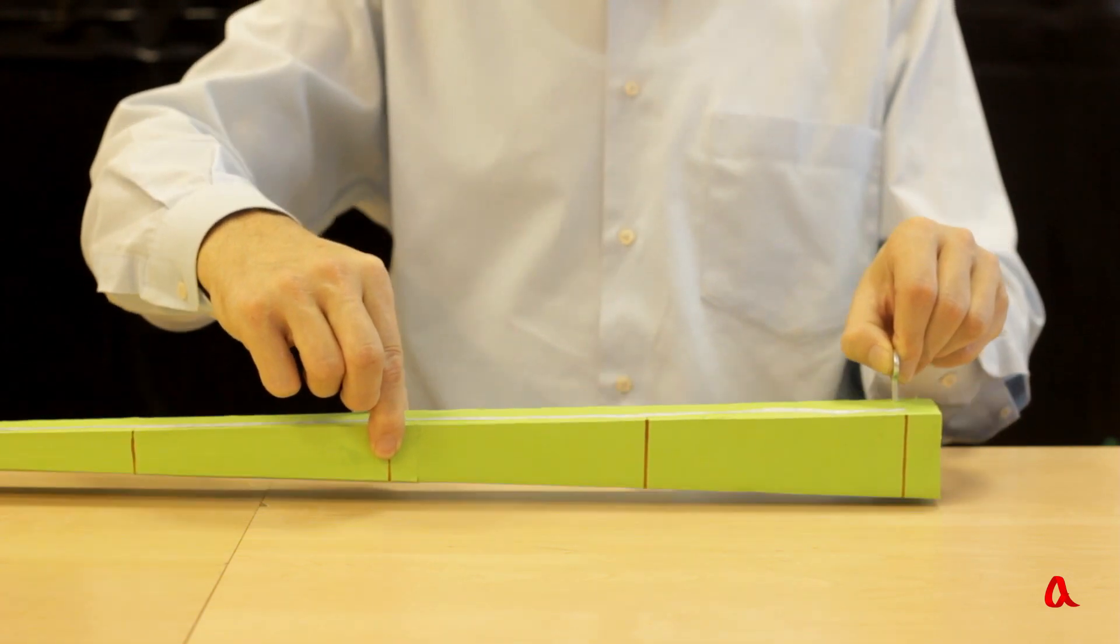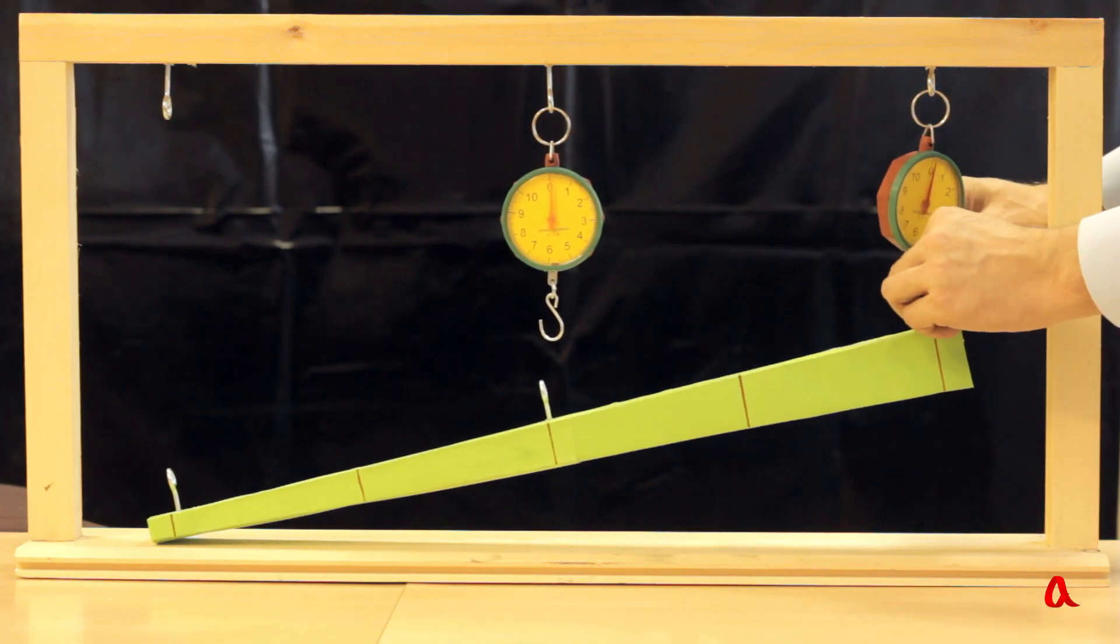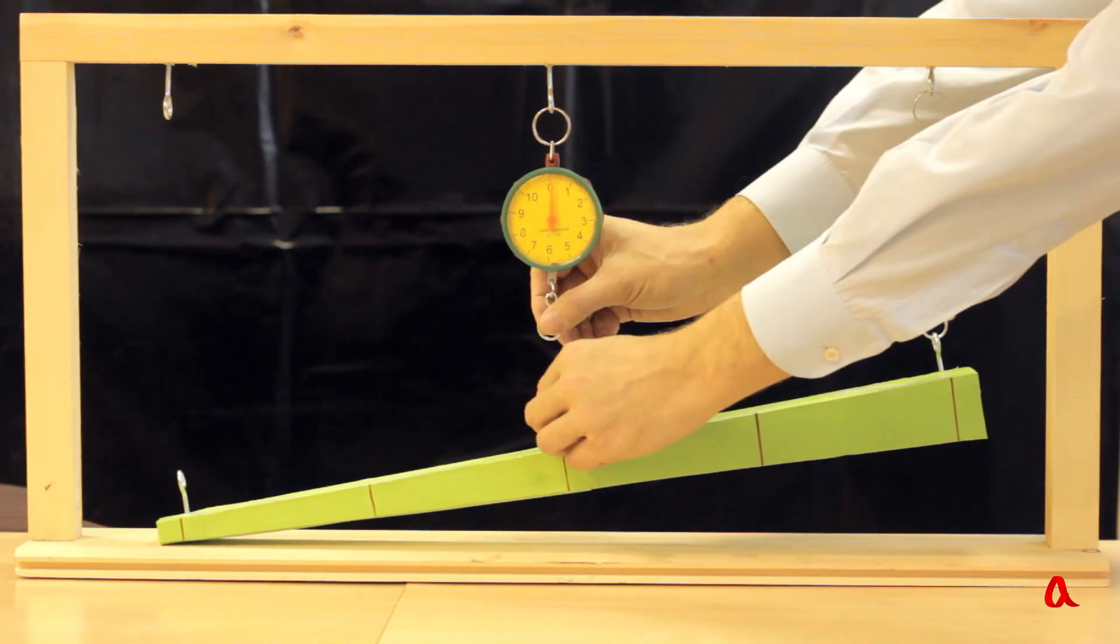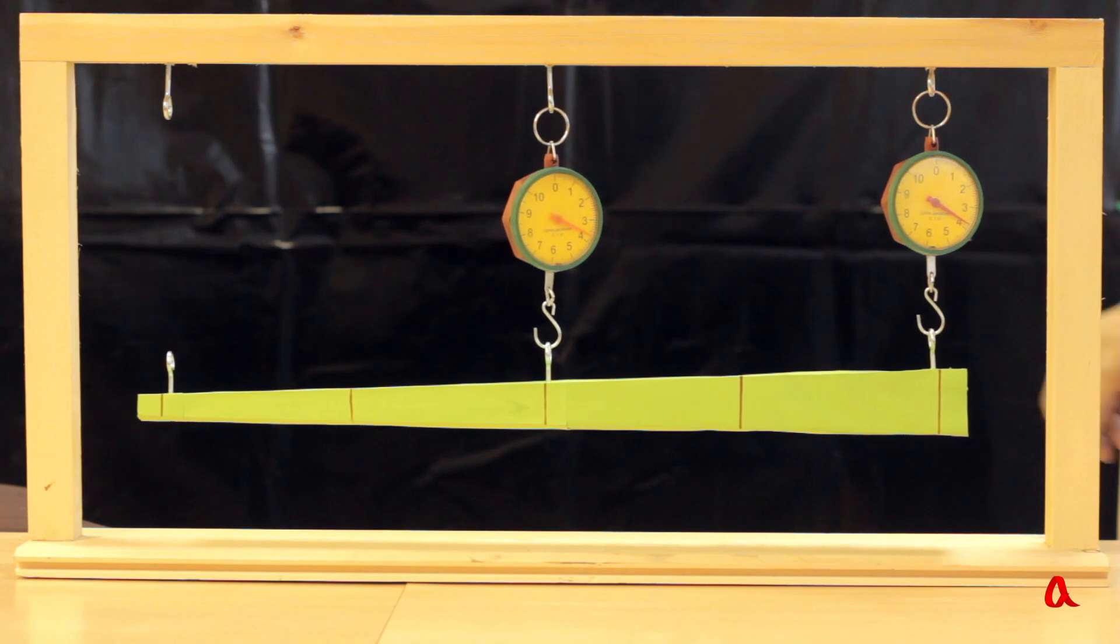We screw a ring into this spot, hang the beam onto the scales and we see that both suspension points do have equal loading.